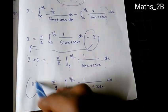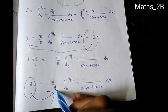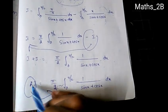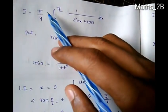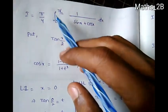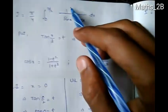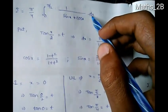So 2I equals π/2 times integration from 0 to π/2 of 1 divided by (sin x + cos x) dx. Dividing both sides by 2, I equals π/4 times integration from 0 to π/2 of 1 divided by (sin x + cos x) dx.